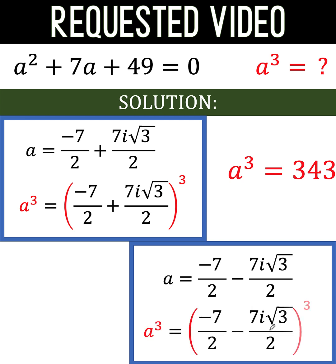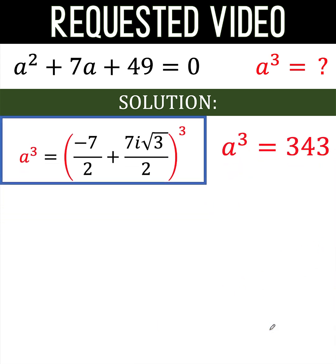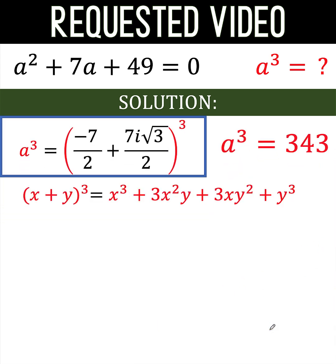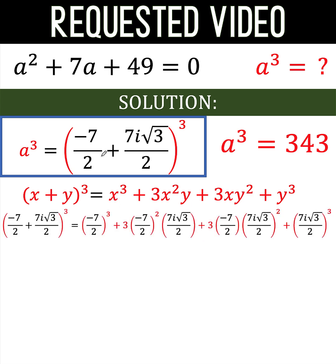So let's do the cubing now using the formula for the cube of a binomial. So here, our x is negative 7 halves. So replace all these x's by negative 7 halves. And our y is 7i times the square root of 3 over 2. So we replace all instances of y by that value. Then just copy the corresponding exponents.